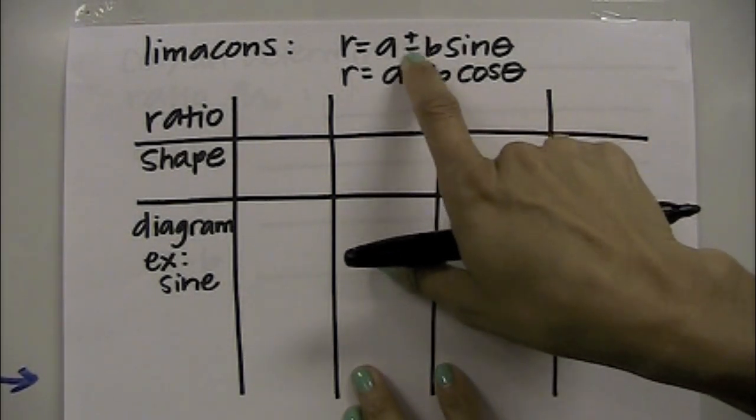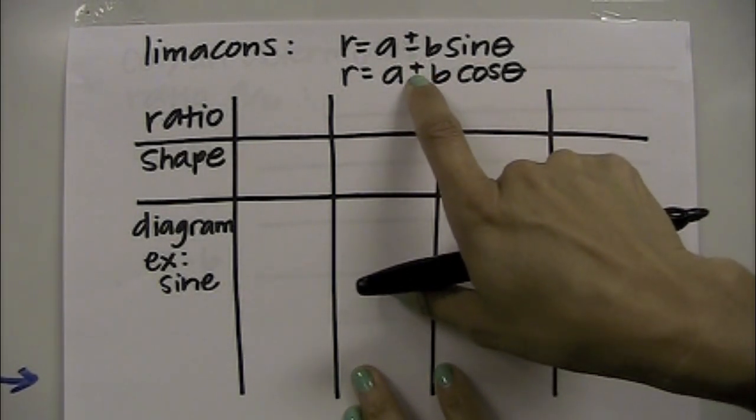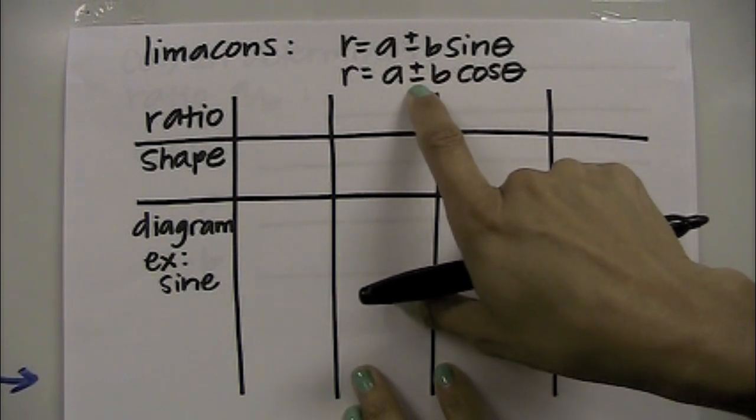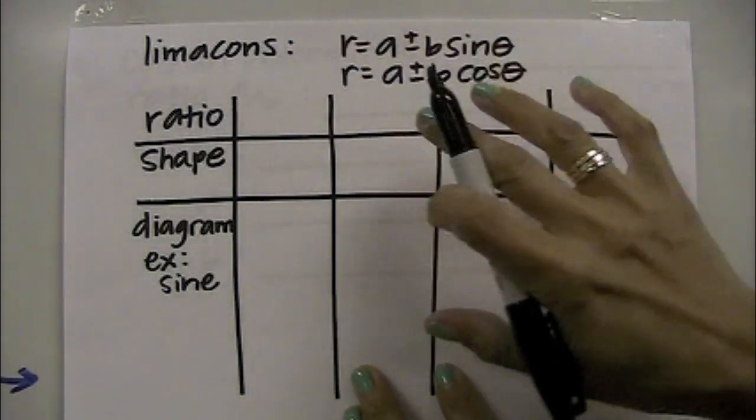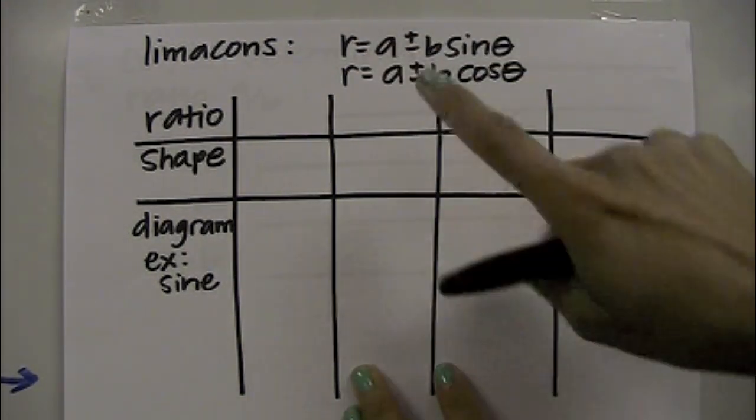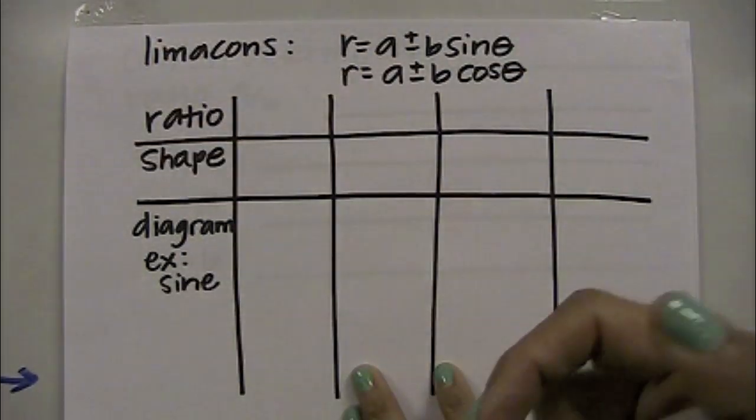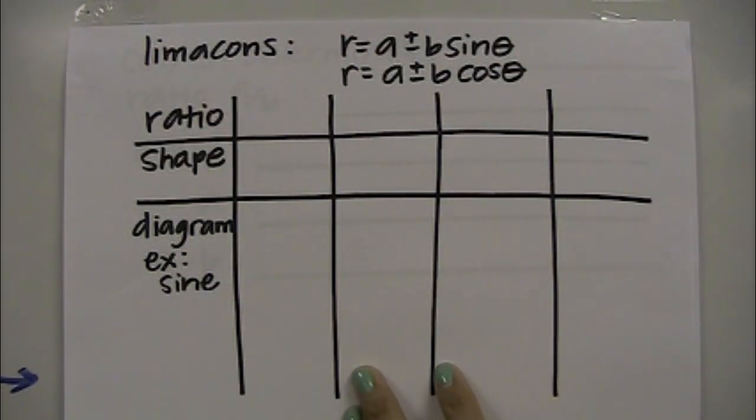Also if it's a plus versus a minus, the equation will either have a plus or a minus, not both. If it has a plus, then it will be on either the top or the right side of the graph, and if there's a minus, it will be on the bottom half or on the left side. So that stays consistent with circles, which is convenient.